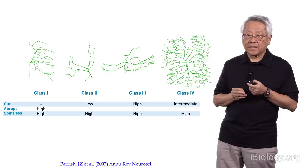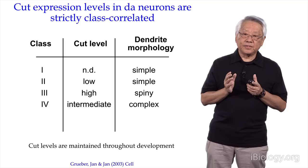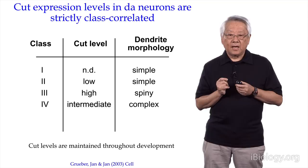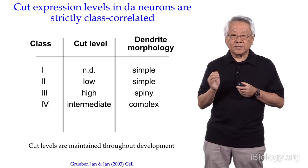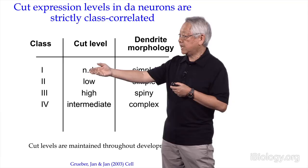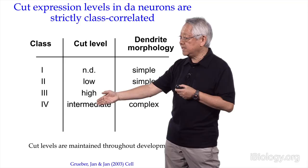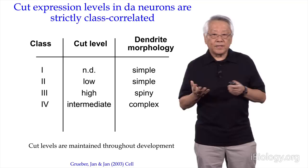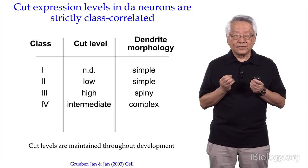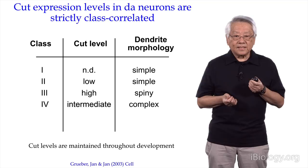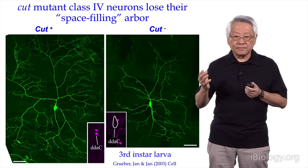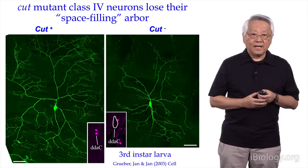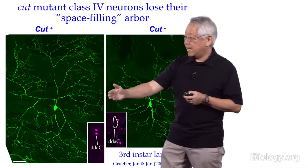CUT is a homeobox-containing transcription factor. When Wes Gruber was a postdoc in our lab, he noticed that the level of CUT expression correlates with the neuronal cell type: class 1 has no CUT, class 2 has a low level of CUT, class 4 has an intermediate level, and class 3 has a high level of CUT. Wes wondered whether the level of CUT may regulate the complexity of the dendrite in a cell type-specific manner. To test this, he asked what would happen if he removed CUT from different classes of neurons. The normal class 4 neuron has a very large dendrite arbor, but if CUT is removed from class 4, the dendrite arbor becomes much smaller and the branching pattern is also simplified.